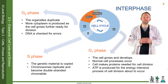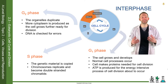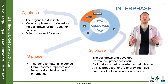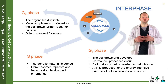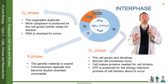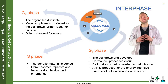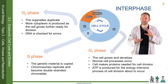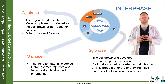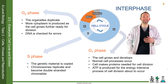Then we get the second G phase, G2 in interphase, where the organelles duplicate. If we're going to split this cell into two, we're going to need more of all the organelles. More cytoplasm is also produced at this point, and the cell grows further ready for division. DNA is also checked for errors — it's a self-checking process to make sure there haven't been any errors when copying, so that the daughter cells don't get a mutation.